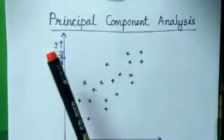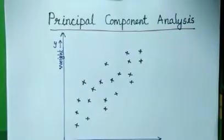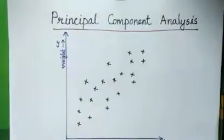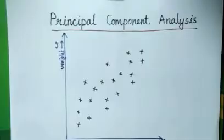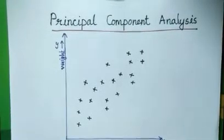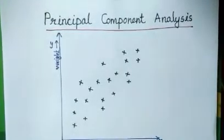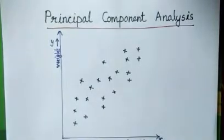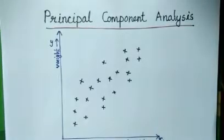Hi all, today we are going to discuss the topic principal component analysis. Principal component analysis is a feature extraction method used to reduce the dimension of a data set. In the previous video we discussed dimensionality reduction and one method called subset selection. Subset selection is a feature selection method in which a subset of features is selected for learning. Now let us see whether subset selection is always a good method, and then we will move to principal component analysis.